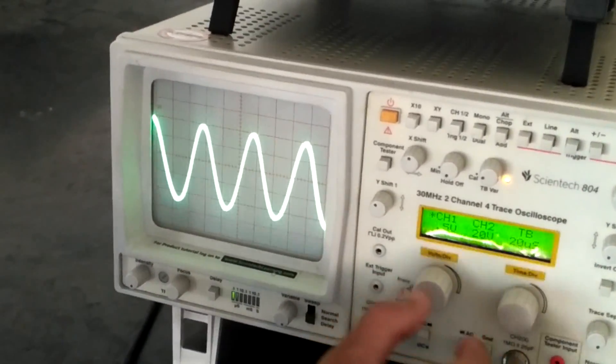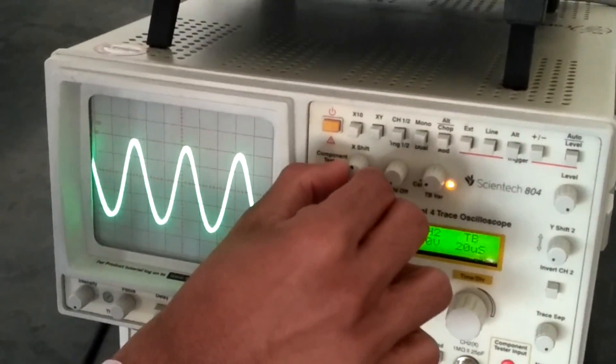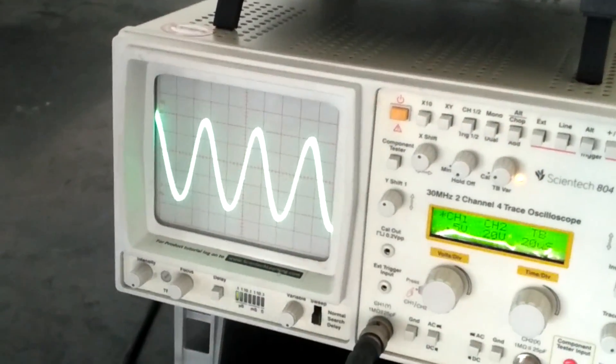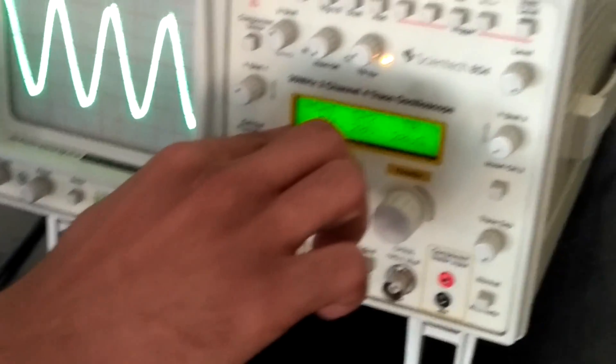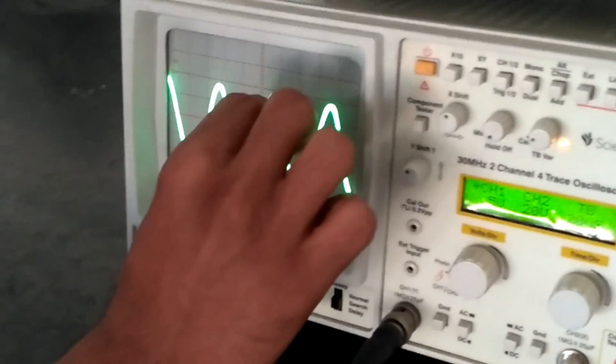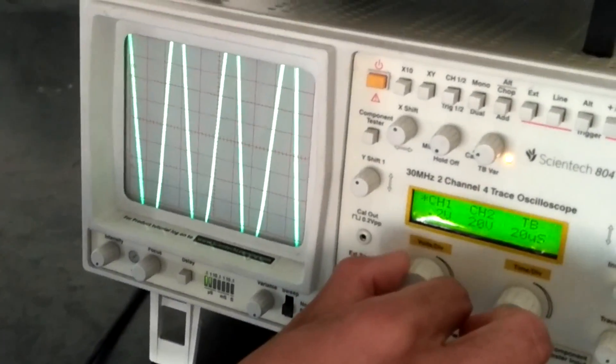We can change voltage per division. That means for each division we can change the voltage rating. Here it is 0.5, that is for each division the voltage is 0.5. We can change it accordingly.